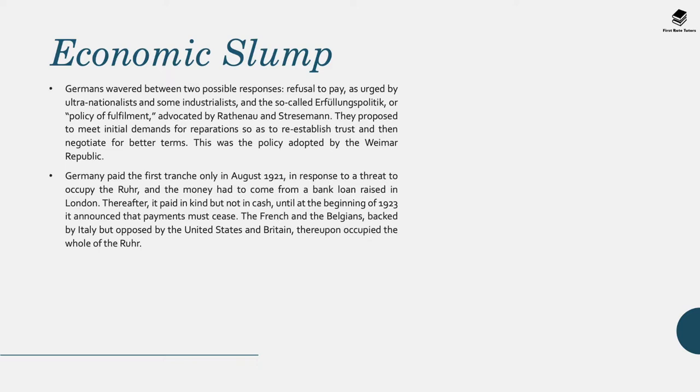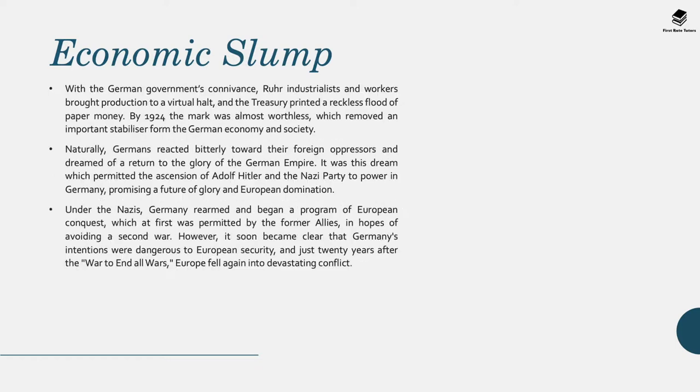Germany paid the first tranche only in August 1921, in response to a threat to occupy the Ruhr — a rich industrial area — and the money had to come from a bank loan raised in London. Thereafter it paid in kind but not in cash until the beginning of 1923, when it announced that payments must cease. As a result, the French and Belgians, backed by Italy but opposed by the US and Britain, occupied the whole of the Ruhr. With the German government's connivance, Ruhr industrialists and workers brought production to a virtual halt, and the treasury printed a reckless flood of paper money.